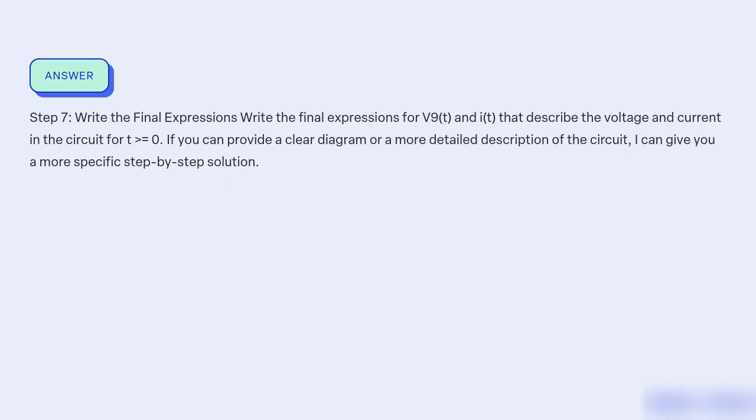Step 7: Write the final expressions. Write the final expressions for V init and i(t) that describe the voltage and current in the circuit for T=0. If you can provide a clear diagram or a more detailed description of the circuit, I can give you a more specific step-by-step solution.